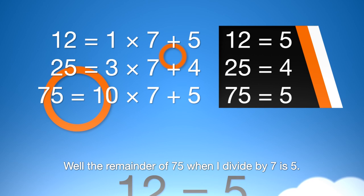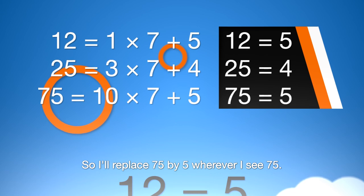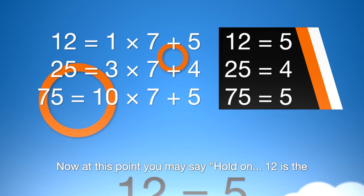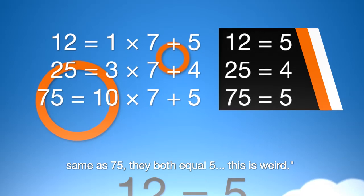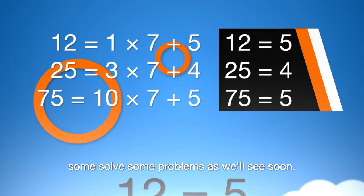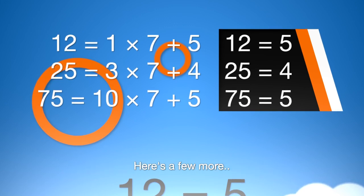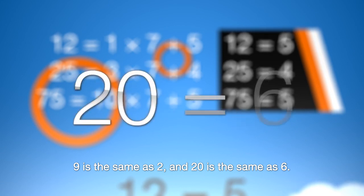Next, 75. Well, the remainder of 75 when I divide by 7 is 5. So I'll replace 75 by 5 wherever I see 75. Now at this point you might say hold on, 12 is the same as 75. They both equal 5. This is weird. Well it is weird and it's lazy but it's going to help us solve some problems as we'll see soon. Here's a few more: 9 is the same as 2 and 20 is the same as 6.